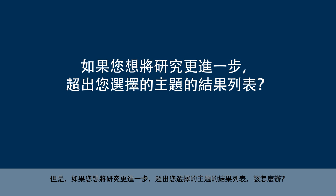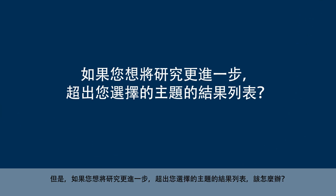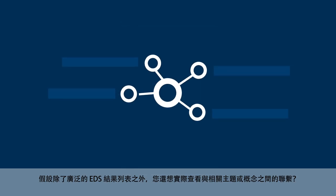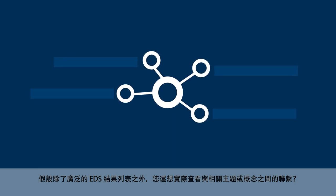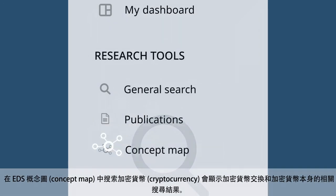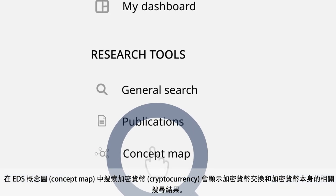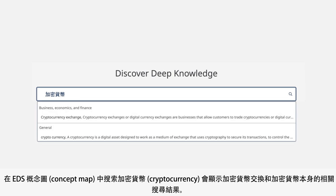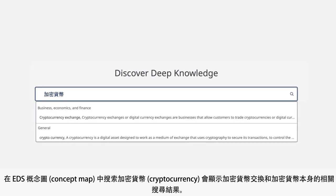But what if you want to take your research a step further, beyond the results list of your subject of choice? In addition to the extensive EDS results list, you can also see the connections to related subjects or concepts. A search in the EDS concept map for cryptocurrency brings up results for both cryptocurrency exchange and cryptocurrency itself.